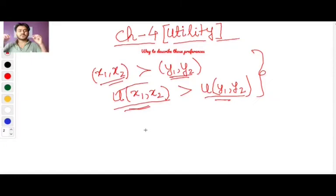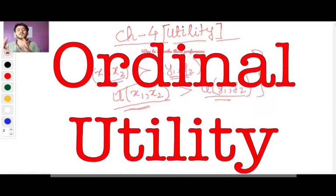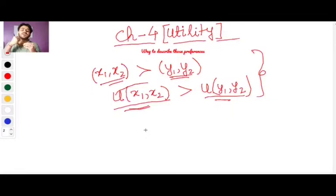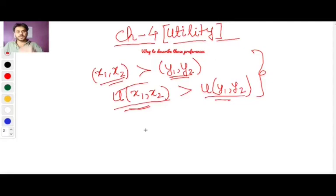We are not really bothered about the magnitude of these numbers as long as the preferred bundle has a higher number. The numbers only serve the purpose of aiding comparison of consumption bundles. This kind of utility function is known as ordinal utility. There is also something called cardinal utility, where the value of the utility function itself is important, but we will not get into that territory.